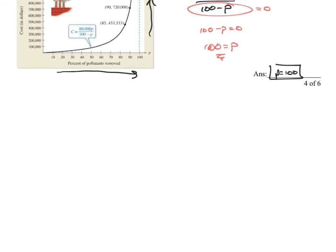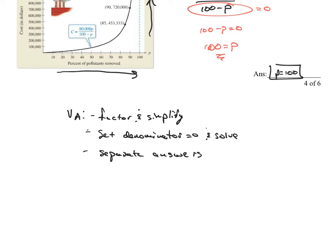So to summarize what we've seen here, when do we find vertical asymptotes? How do we find vertical asymptotes? Vertical asymptotes for rational functions, first thing you want to do is factor and simplify. And then after you factor and simplify, you're going to set the denominator equal to zero and solve. And then you're going to separate your answers and you write your answers as x equals a number, comma x equals a number however many it is.